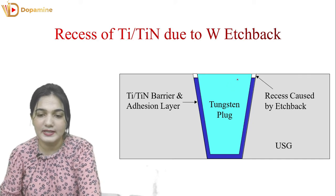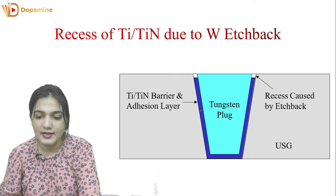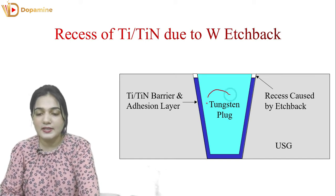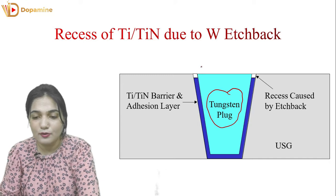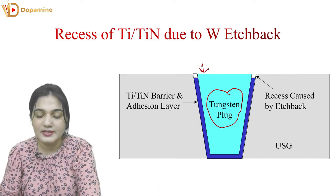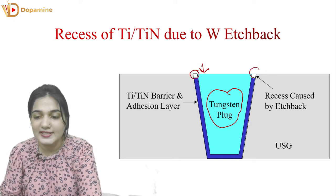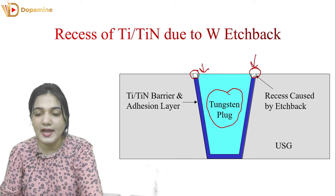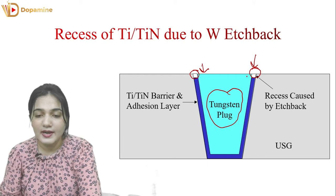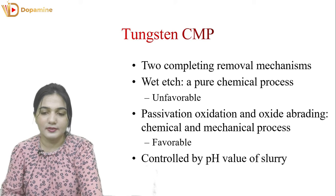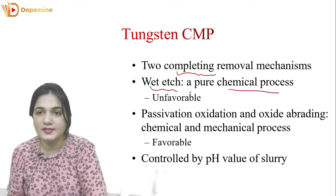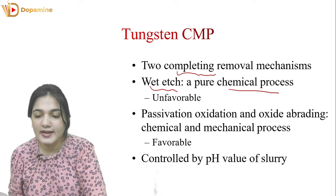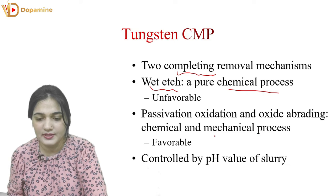You can see the recess of titanium and titanium nitride due to tungsten etchback. The dark blue layer is our titanium and titanium nitride barrier and adhesion layer. To fill tungsten here, we need a titanium or titanium nitride barrier or adhesion layer. If we perform CMP, the excess tungsten, titanium, and titanium nitride will be removed. The recess caused by the etchback of titanium or titanium nitride will create a yield effect. For tungsten removal, there are two competing removal mechanisms: first, wet etch — a pure chemical process, which is unfavorable; second, passivation, oxidation, and oxide abrading — a chemical and mechanical process, which is favorable. We control this process from the slurry pH value.